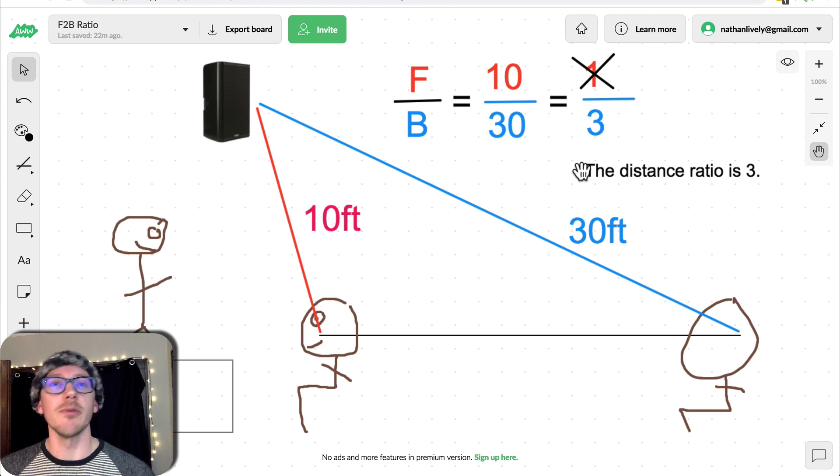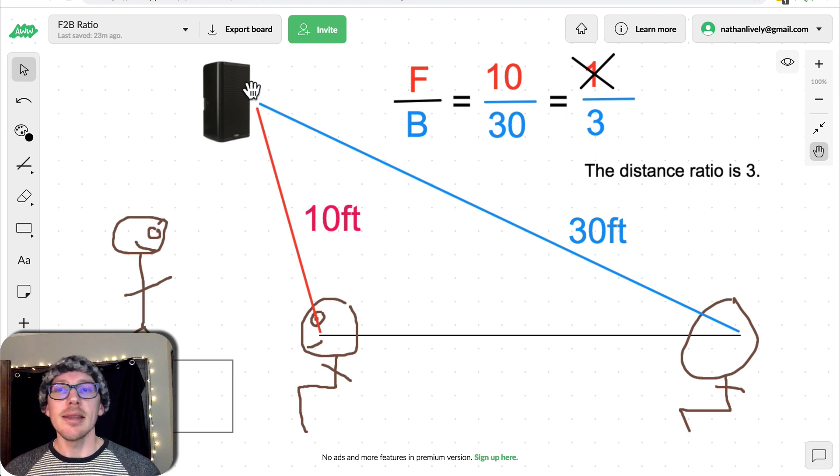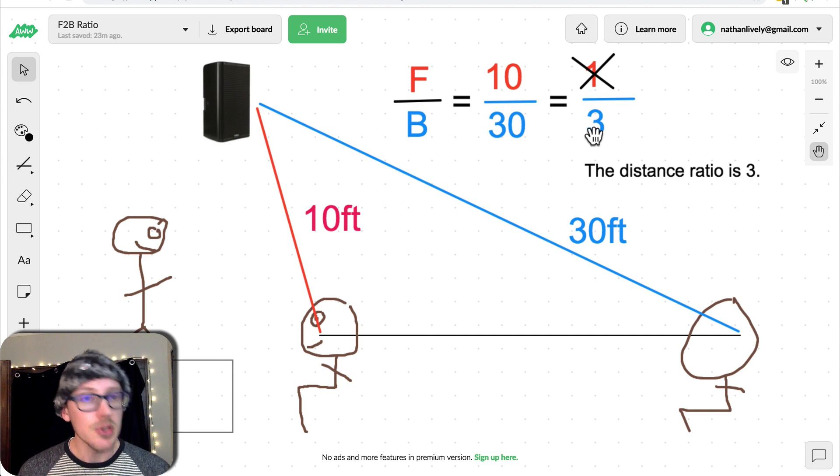This can be shortened to front-to-back distance ratio. So in this case, we've got a simple situation here. The front-to-back distance ratio is 10 feet, and you could measure that with your laser distance measure or measuring tape. And the distance to the back row is 30 feet. So the front-to-back distance ratio is 10 to 30. That can be reduced to 1 to 3.